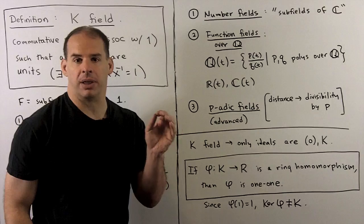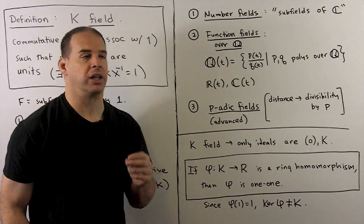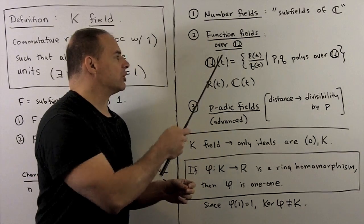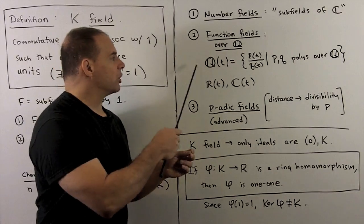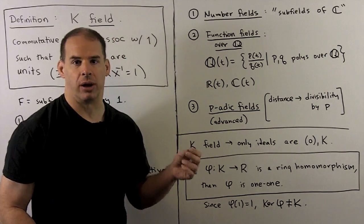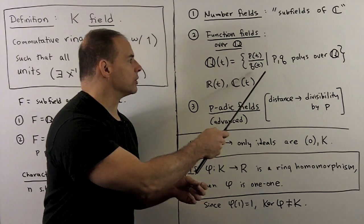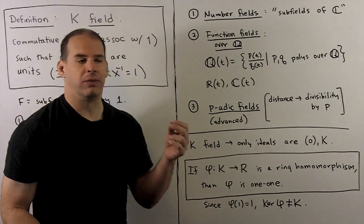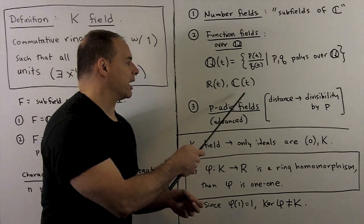Number fields are the subfields of the complex numbers — our main interest. We also have function fields over the rationals: rational functions with coefficients in the rational numbers, so polynomials over polynomials. We also have versions with coefficients over the reals and the complex numbers.